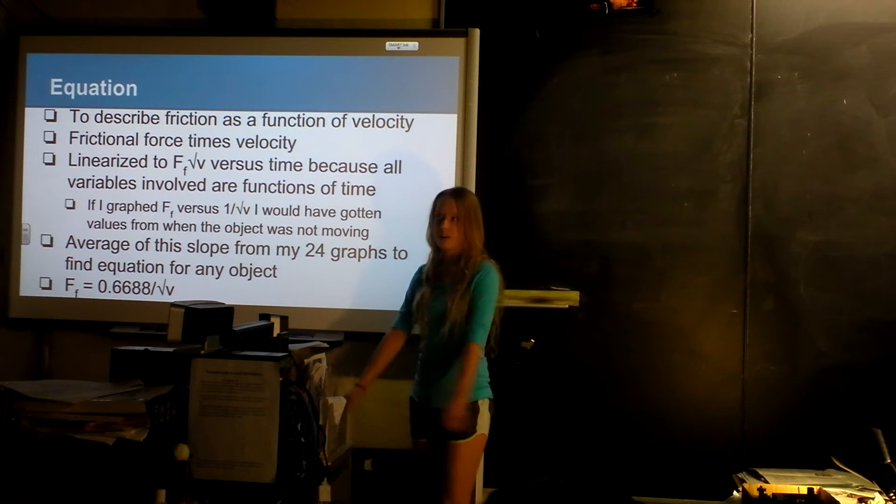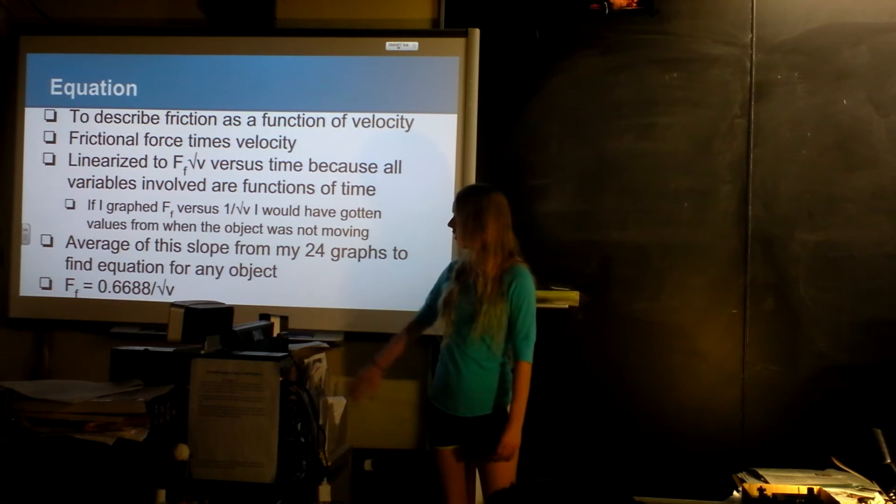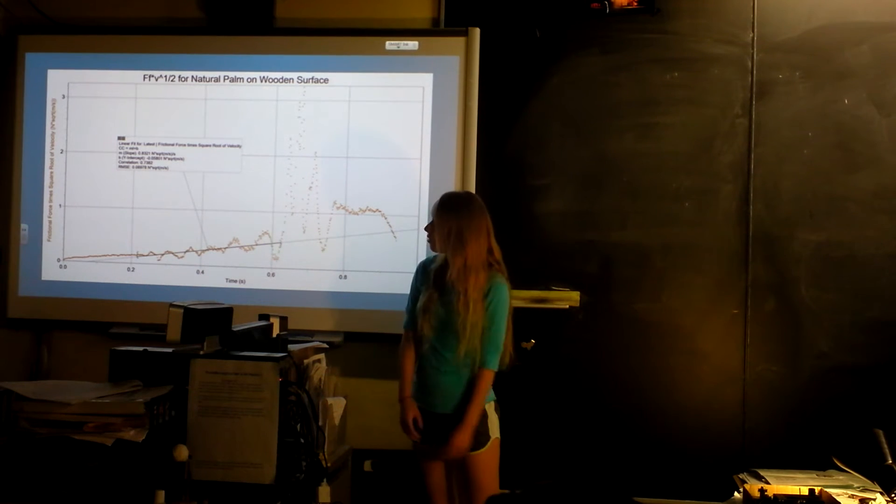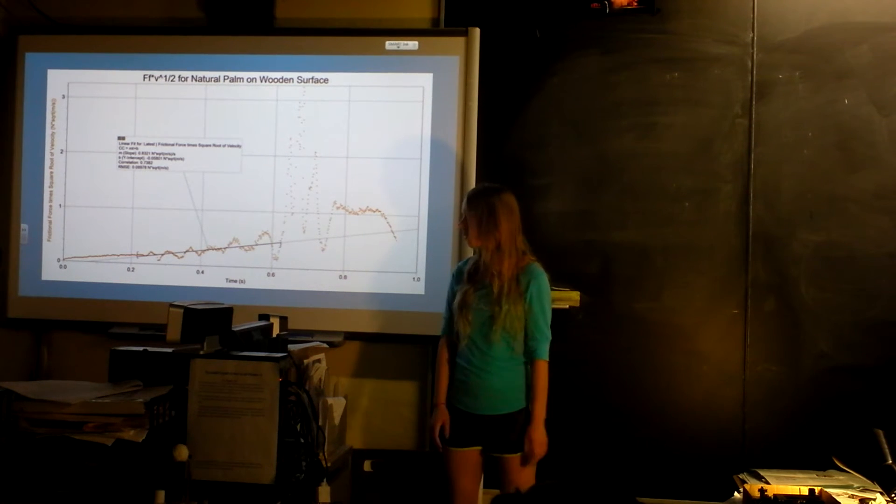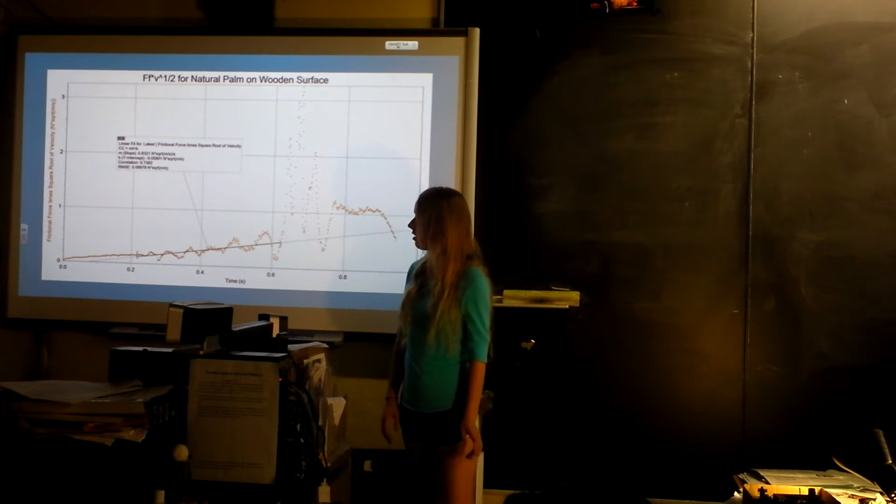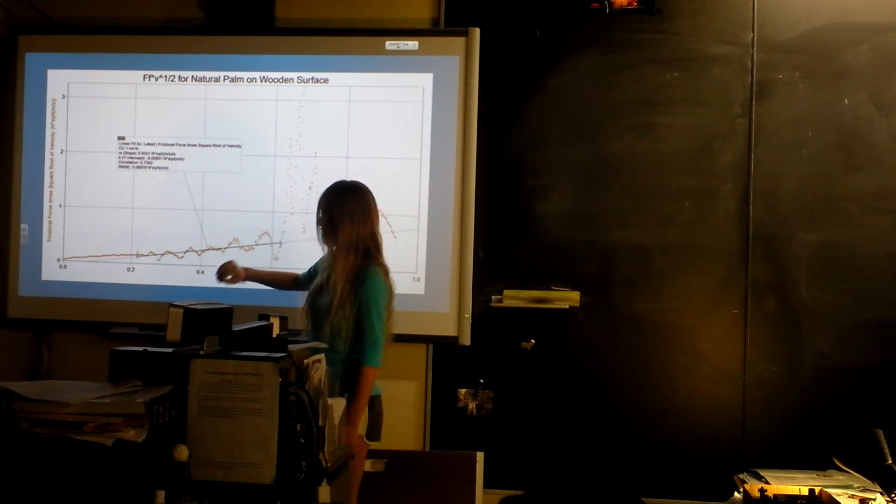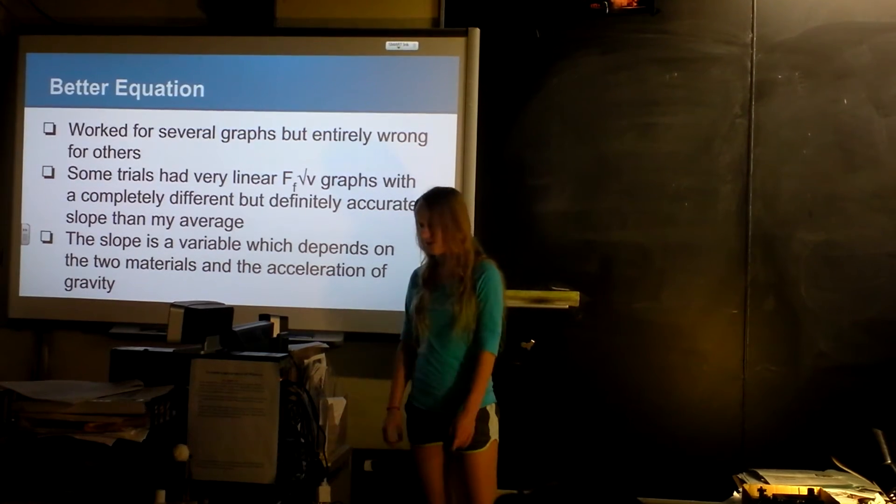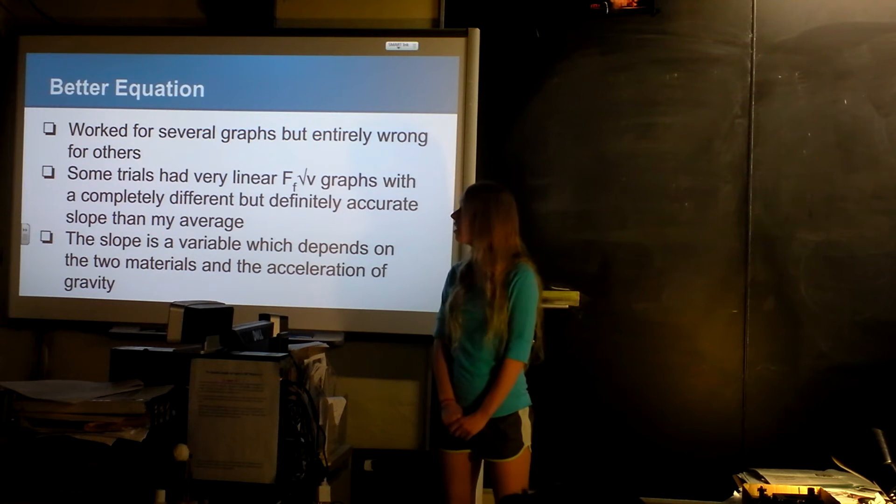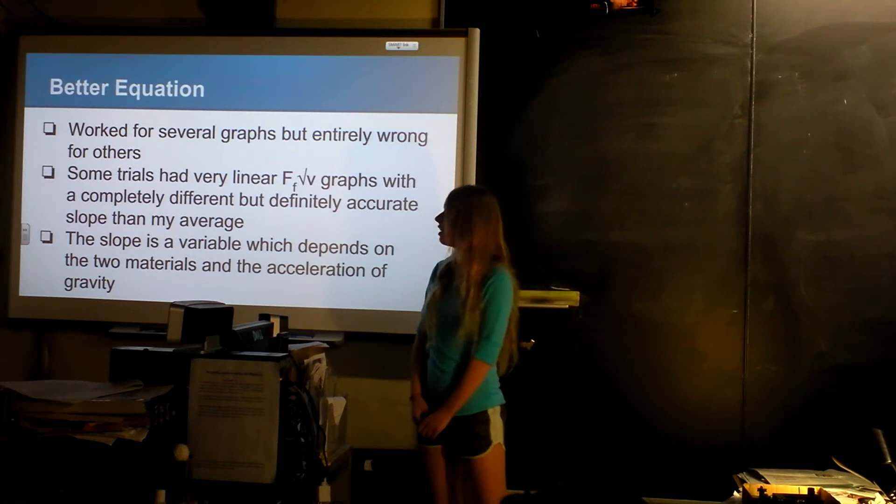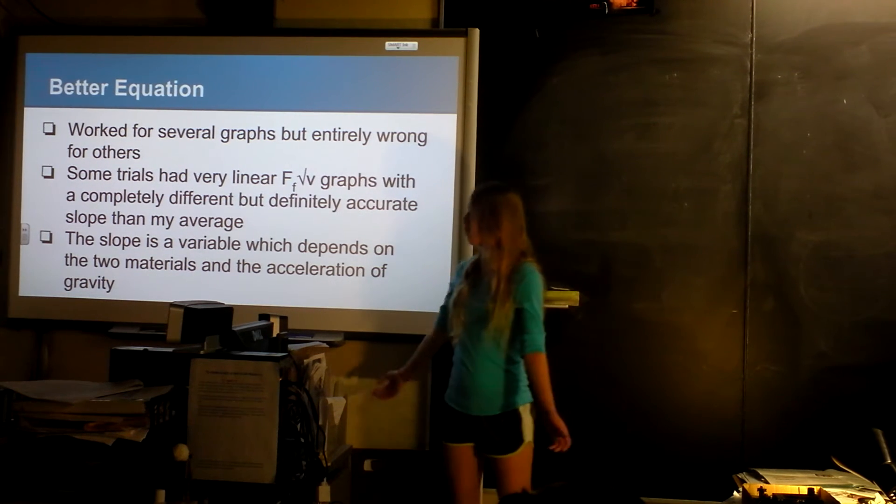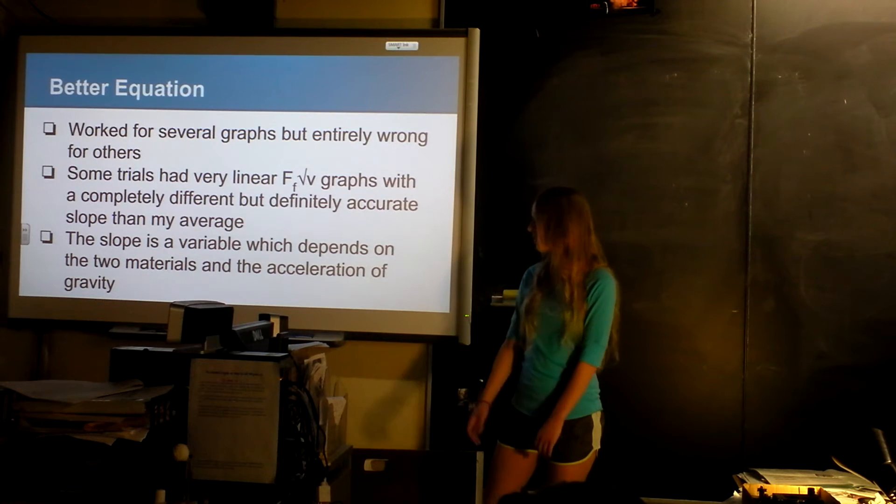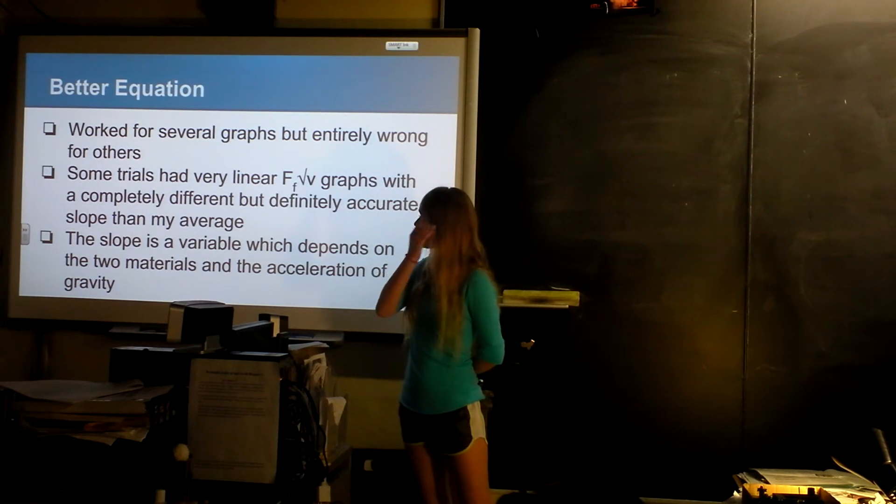I wanted to make an equation that would apply to all of them, so I took the average of all those slopes and it was 0.6688. This is what it looked like when I did the linearized graph of friction times the square root of velocity. This one looks kind of like it's not linear, but the others mostly did. It didn't really work because the line of fit for the force of friction works really good for some of the graphs and really terribly for others. I realized that what I was using as a constant, which was the slope, was actually a variable. Which makes sense because why would they all have the same constant?